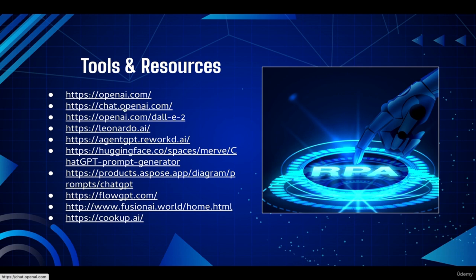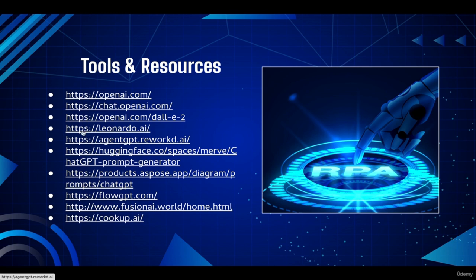ChatGPT and DALL-E are both products of OpenAI, so you need to create your account on OpenAI first before accessing ChatGPT and DALL-E. DALL-E is basically a text-to-image generator, the same as Midjourney. Leonardo AI is also a text-to-image generator. These are the four main tools and the rest are supporting tools.